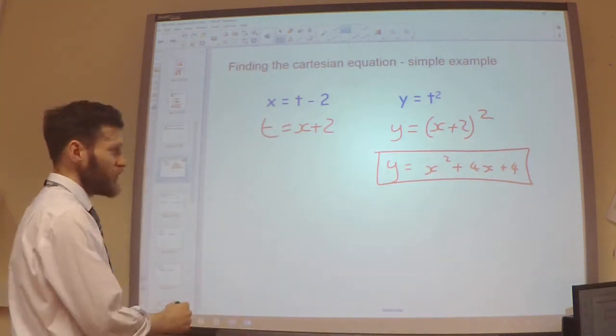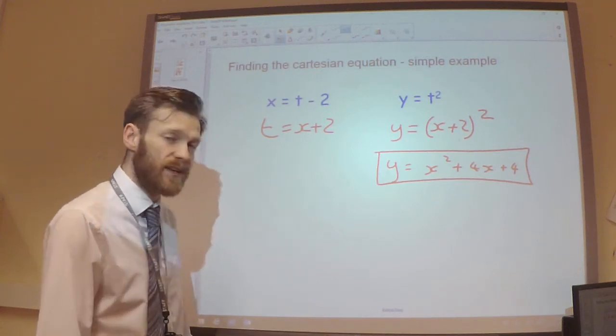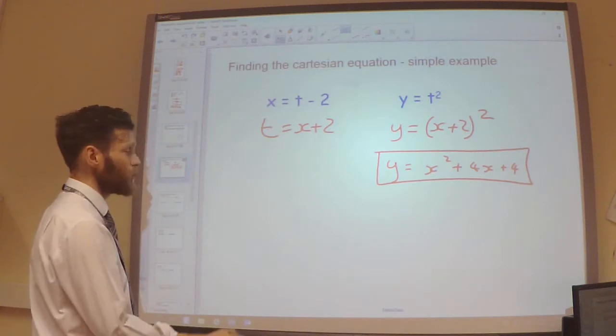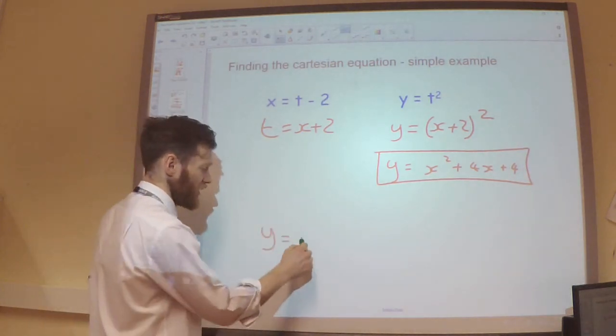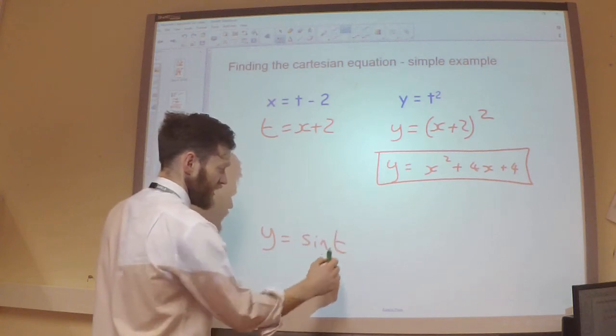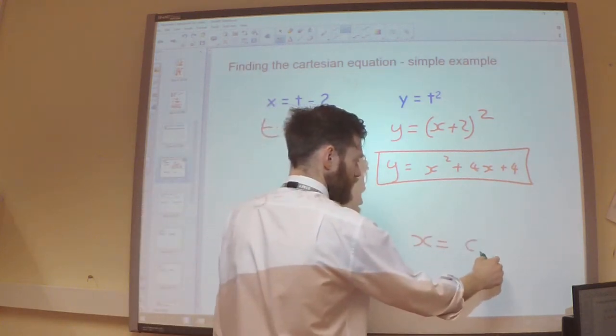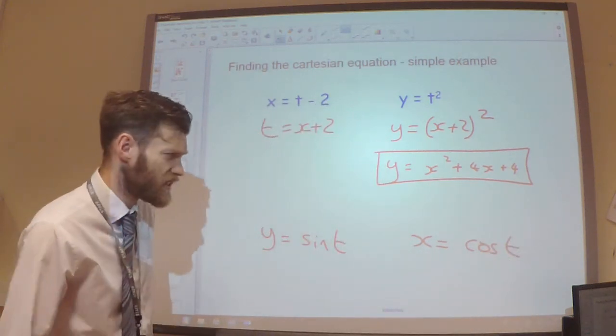Now if we try to use the same method for doing trigonometric functions, it's going to get quite complicated because it's much harder to rearrange. So let's say for example I had y equals sine t and I had x equals cos t. And if I try to do the same idea here...